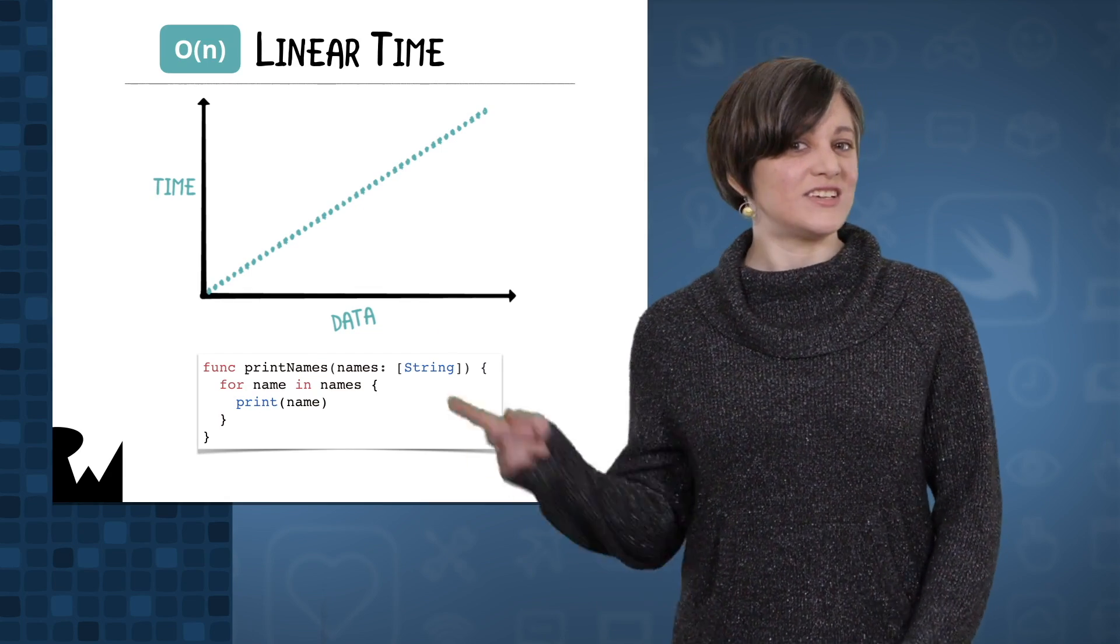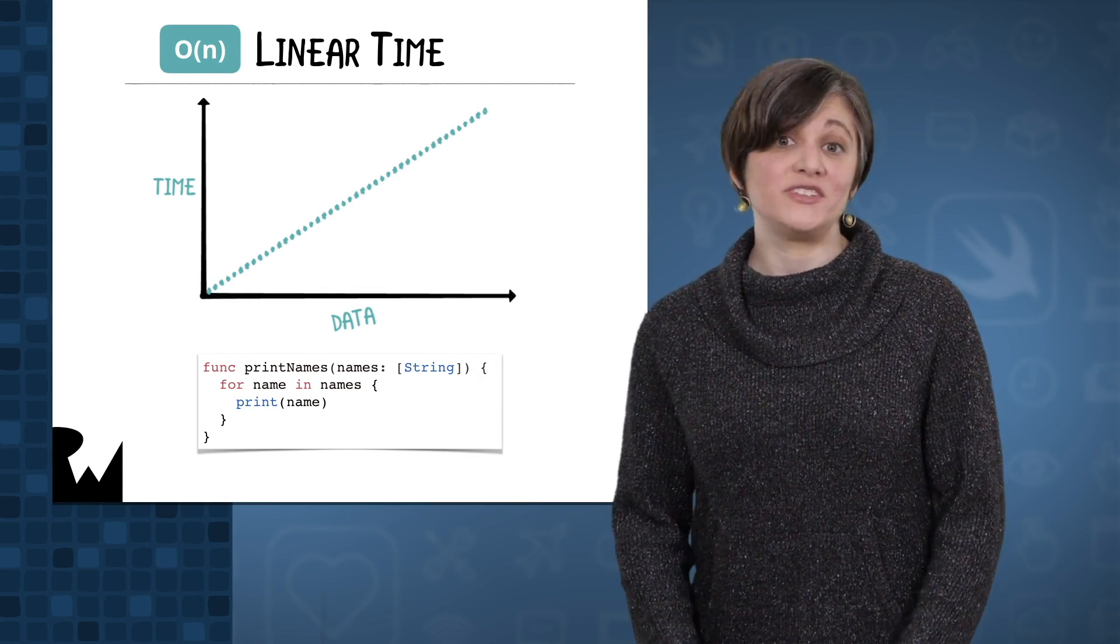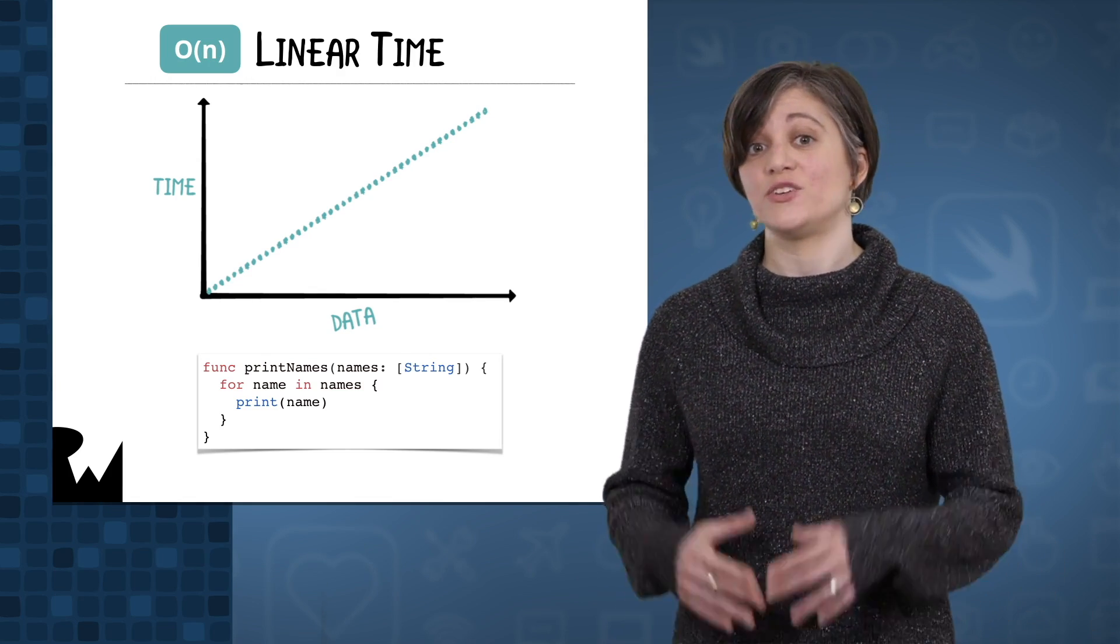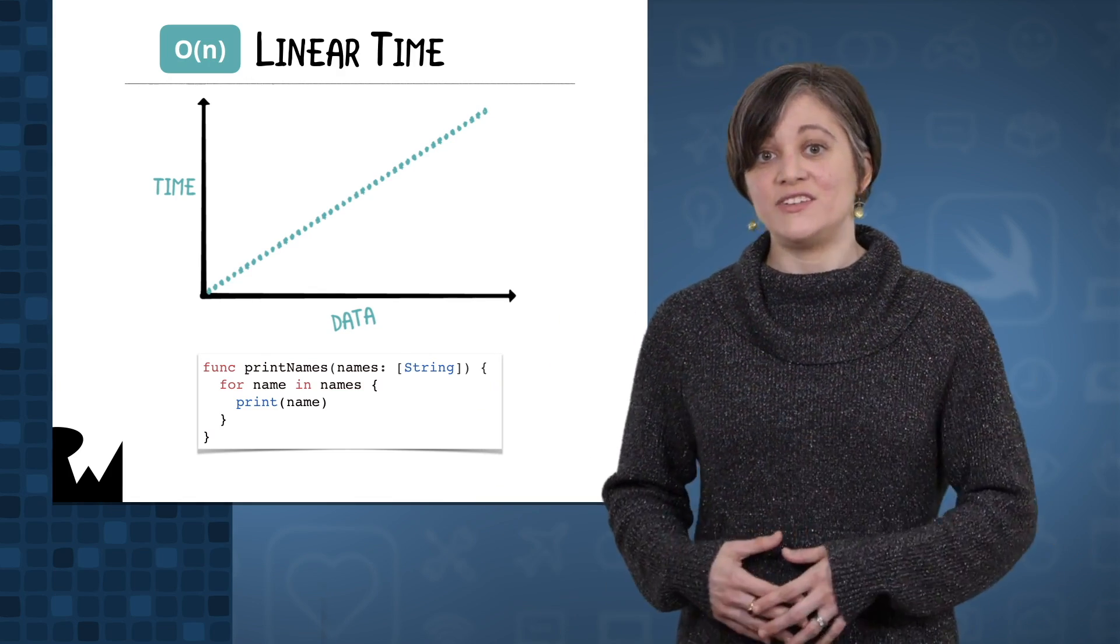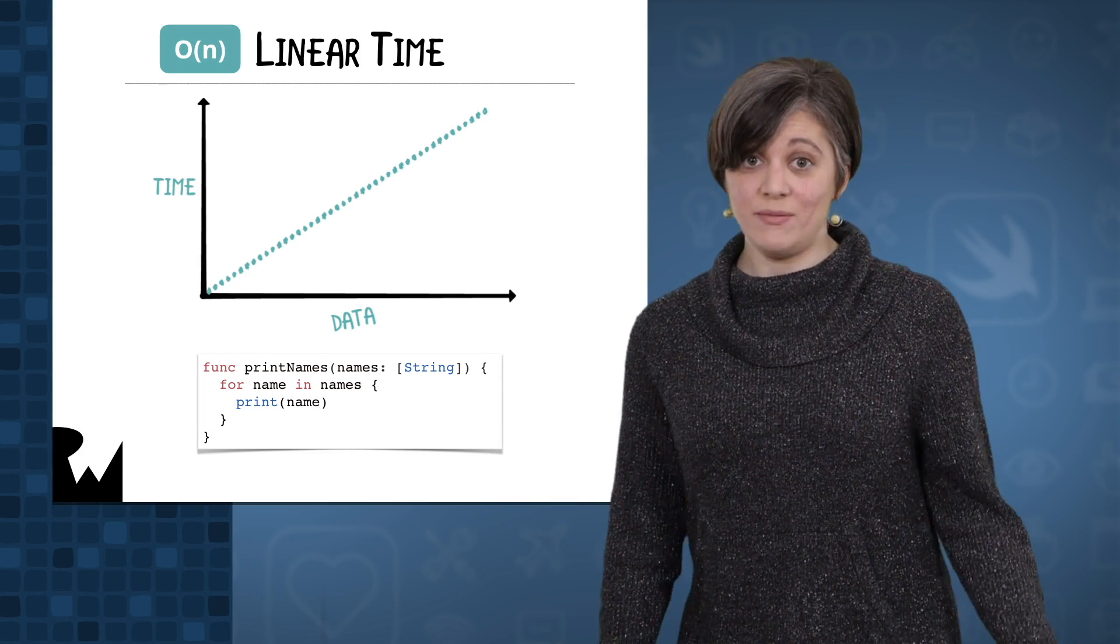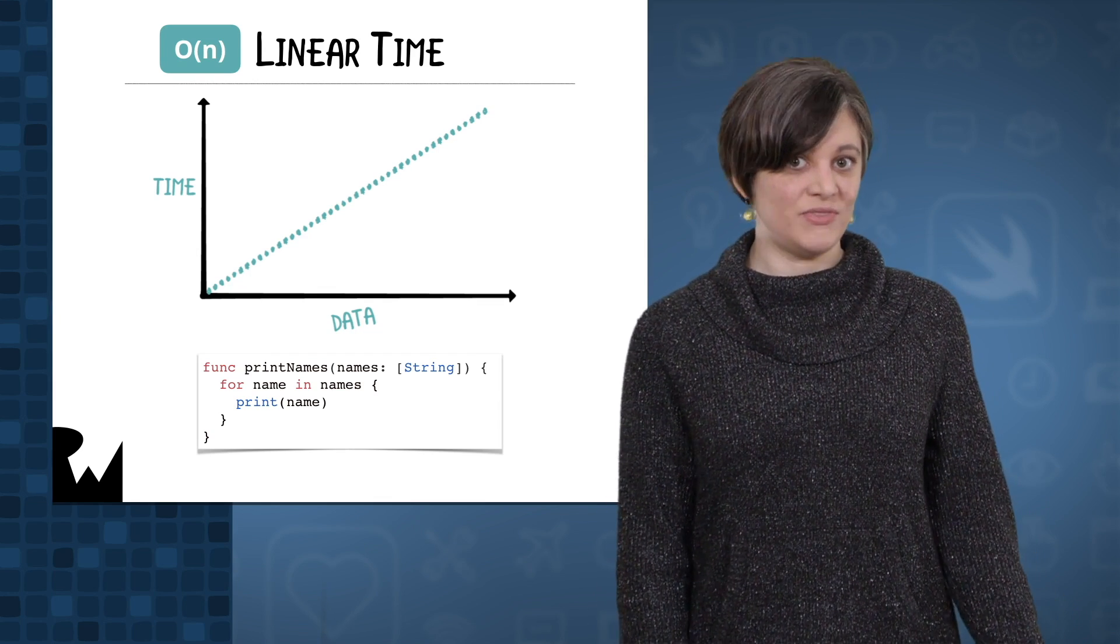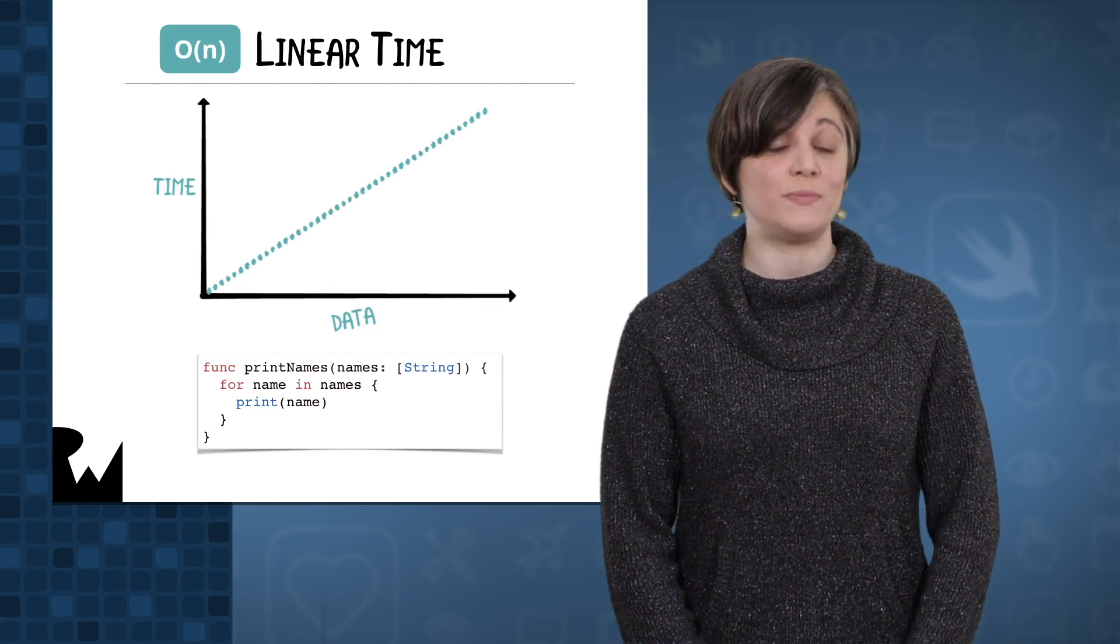What about a function like this that prints out each name in a string array? As the input array increases in size, the number of iterations that the for loop makes is increased by the same amount. This is an example of a linear time operation. With linear time, as the amount of data increases, the running time increases by the same amount. The Big O notation for linear time is big O of n.